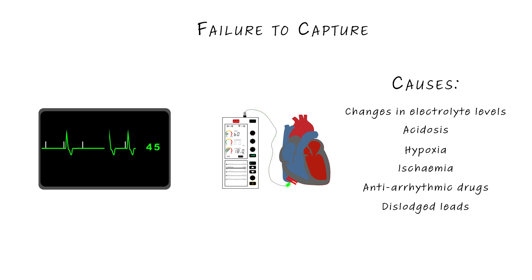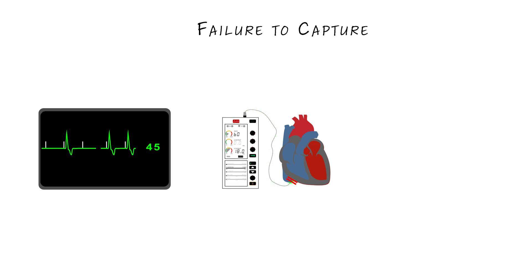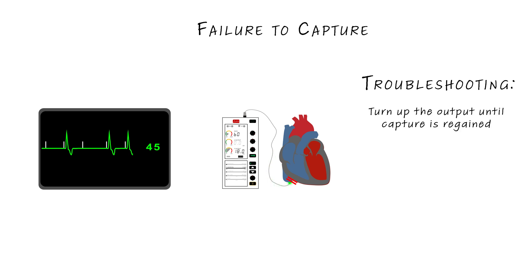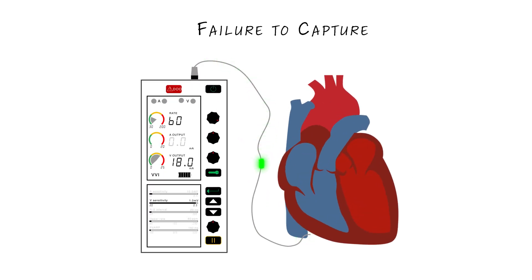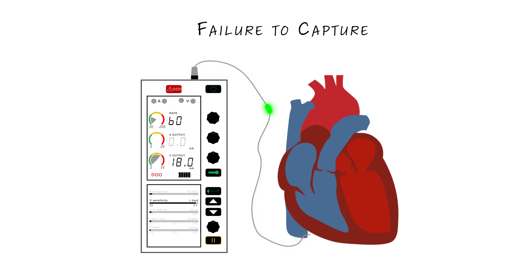Dislodged leads can also cause failure to capture, as the impulse reaches the end of the pacing wire but isn't transferred to the myocardium. When troubleshooting this, consider immediately turning the output up until capture is regained, then performing a pacing check if the patient is stable. Further investigation should then be done looking for the cause. In an emergency, remember the pulse generator has a button for emergency pacing — the DOO button at the top. This switches to asynchronous pacing and turns the output up to maximum. It's a good idea to press this if pacing fails and the patient becomes unstable.